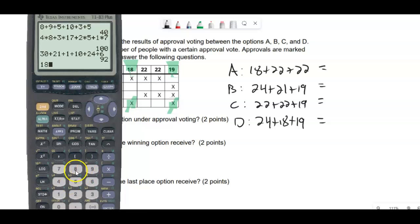18 plus 22 plus 22. 24 plus 21 plus 19. 22 plus 22 plus 19. And 24 plus 18 plus 19. There's these four numbers.